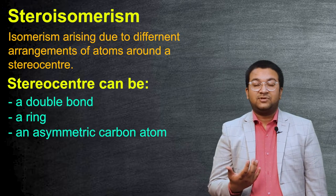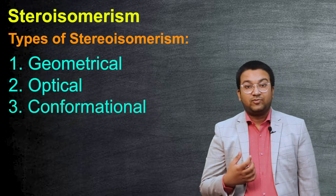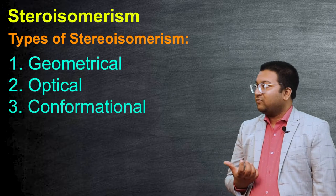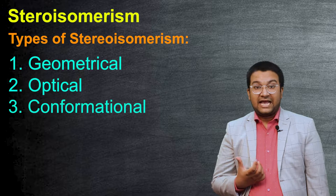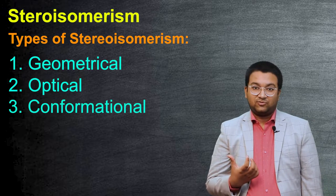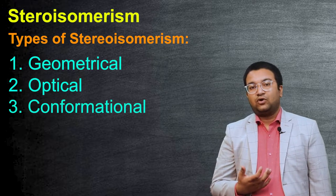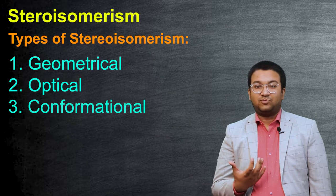Based on this, we divide stereoisomerism into three major parts. First one is geometrical isomerism, the second one is optical isomerism, and the third one is conformational isomerism. Let's have a look at all three different isomerisms one by one.